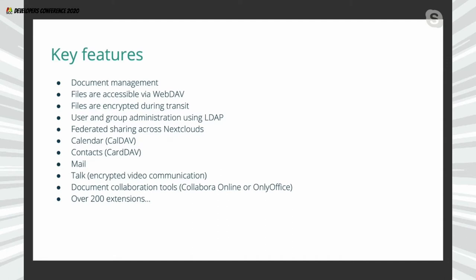You also have federated sharing across Nextcloud instances — I'll cover that in a later slide. You have shared calendar thanks to the CalDAV protocol, groups and contacts thanks to CardDAV. There's a mail extension that converts your Nextcloud into a webmail client, and a Talk extension which is a video communication platform, similar to Jitsi and other online video communication tools. You can also have document collaboration, similar to Google Docs, with multiple people collaborating simultaneously.